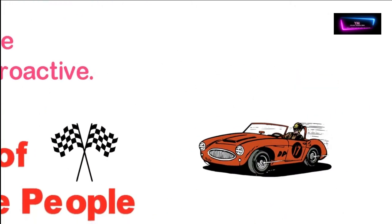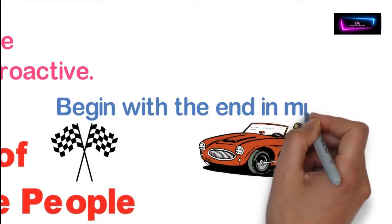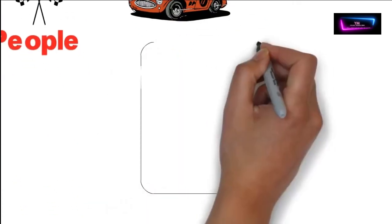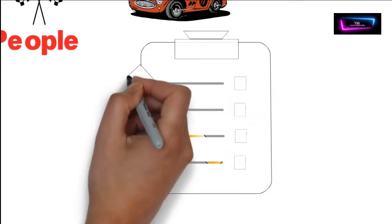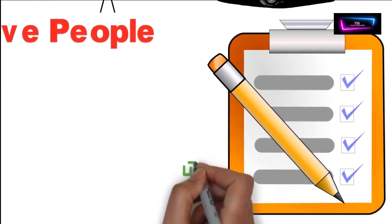One of the things I love about this book is how actionable the advice is. Covey provides concrete steps and exercises to help readers put the habits into practice and see real results. The book is written in a way that is easy to understand and engaging, making it accessible to readers of all levels.